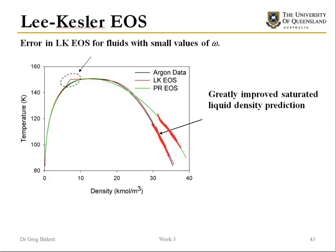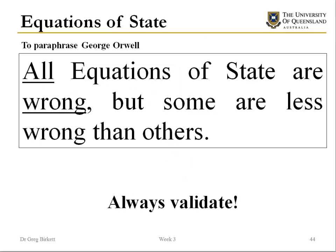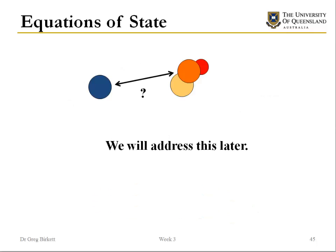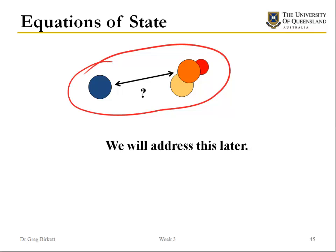There is a limit to this, and all equations of state are wrong — but some are less wrong than others. We need to validate whether our equations are useful for what we're modeling. Never use a more complicated equation of state than you have to: if you can use ideal gas, use it; if Peng-Robinson works, use it; if you need more accuracy, use Lee-Kessler. One thing not yet addressed is what happens with mixtures — we will address this later on.